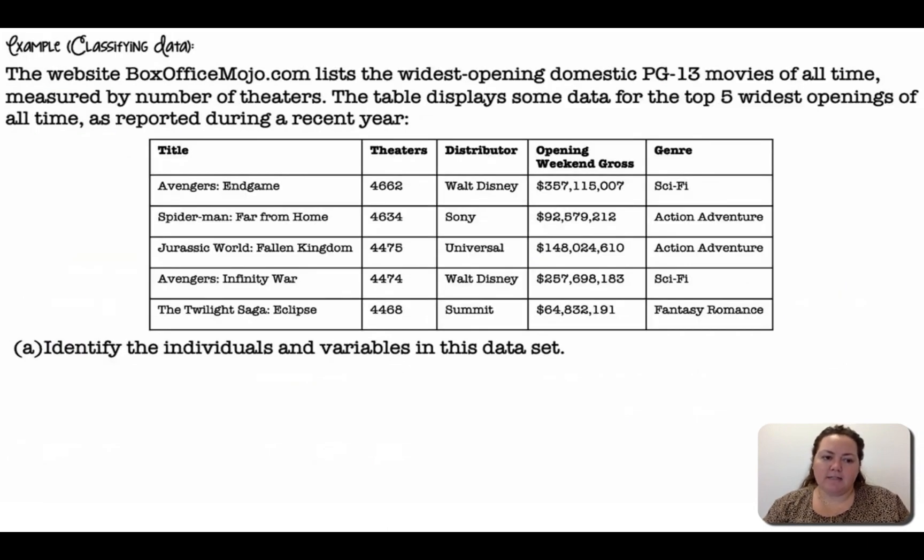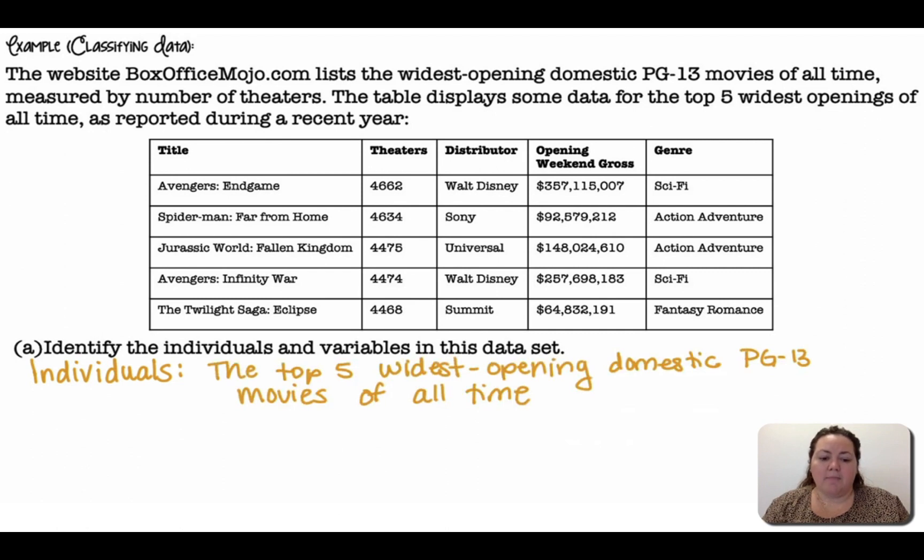So an example classifying data. The website boxofficemojo.com lists the widest opening domestic PG-13 movies of all time, measured by a number of theaters. The table displays some data from the top five widest opening of all time, as reported during a recent year. So we have five movie titles, the theaters, how many theaters they were played at, what distributor they're from, the opening weekend gross amount of money they brought in, and the genre. So identify the individuals and the variables in this data set. Well, the individuals is like what I'm collecting data on, are the top five widest opening domestic PG-13 movies of all time.